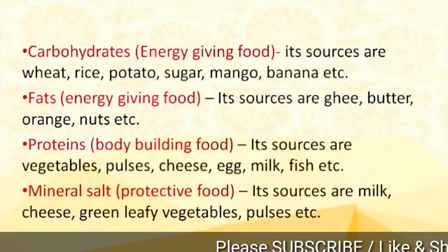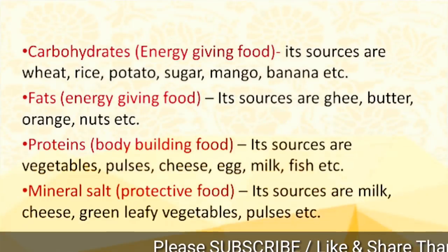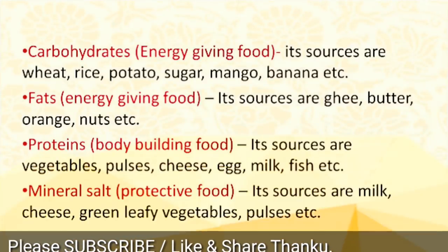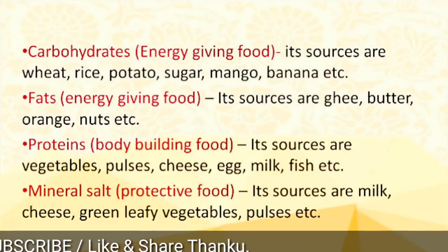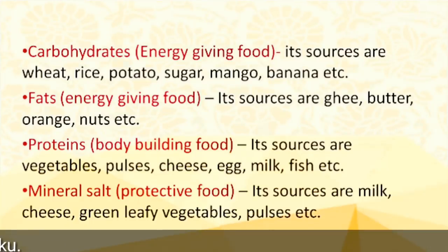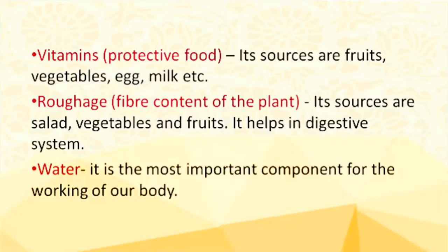Examples of these nutrients: Carbohydrates are energy-giving foods; sources include wheat, rice, potato, sugar, mango, banana, etc. Fats: examples are ghee, butter, nuts, etc. Proteins: examples are vegetables, pulses, cheese, egg, milk, fish, etc. Mineral salts: sources are milk, cheese, green leafy vegetables, pulses, etc. Vitamins: sources are fruits, vegetables, egg, milk, etc. Roughage comes from salad, vegetables, and fruits and helps in the digestive system. Water is also a very important nutrient which our body needs and helps for the functioning of our body.